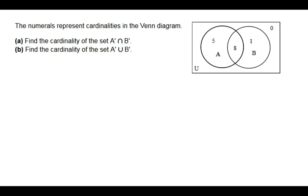What we have is a two-set Venn diagram in this question, and we're asked about the cardinality of two different sets. Part A, we'd like to find the cardinality of A complement intersect B complement.